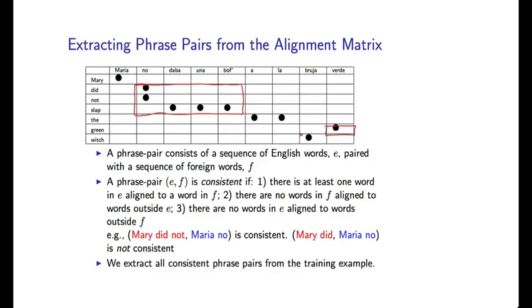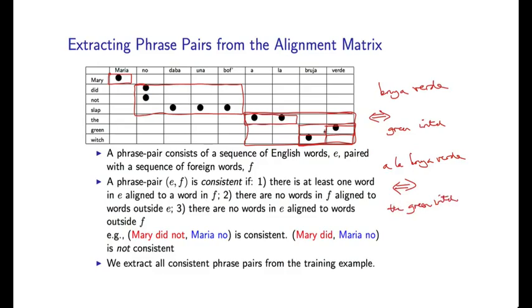So we can have Verdi aligned to green. So we can go through some single word alignment. Maria to Mary. Brücher to witch. So those are some single word phrases or translations. We can translate the as alla. That's another good one. And then there are larger phrases. If we look at this rectangle here, we have Brücher Verdi being aligned to green witch. And if we look at this case here, we have alla Brücher Verdi, I'm sorry for my Spanish, I'm sure it's terrible, aligned to the green witch. And so on and so on.